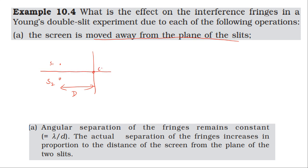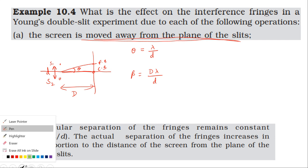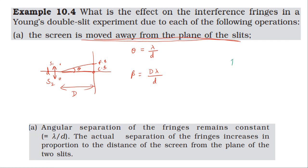The central fringe and the angular position theta — in the angular formula, the angular width is lambda divided by d, where d is the distance between the slits. The fringe width general formula is beta equals capital D times lambda divided by d, where capital D is the distance between the slits and the screen. When the screen is moved away, capital D increases.